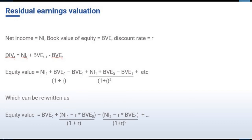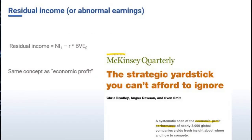The residual income model takes the present value of the expected residual income and adds that to the current book value of shareholders' equity at the start of the forecasting period. Again, if we're valuing equity, the appropriate discount rate is the cost of equity capital. The notion of residual income has long been around — it represents a measure of whether managers are adding value or not. The normal or required earnings is a benchmark figure: what shareholders would expect the firm to generate given its level of risk. If managers generate higher income than this benchmark, they're adding value; if they generate lower earnings, they're destroying value.